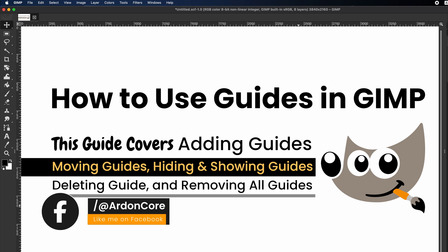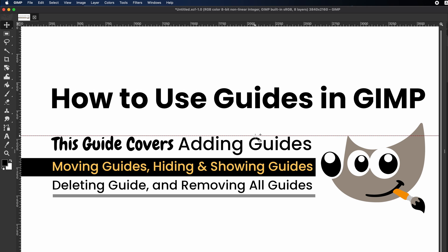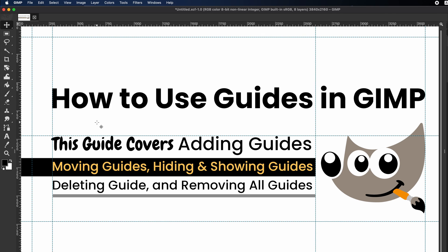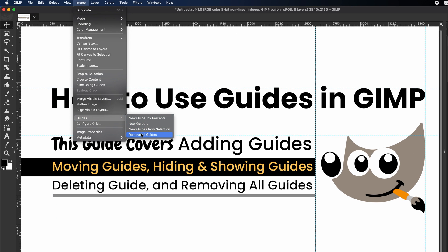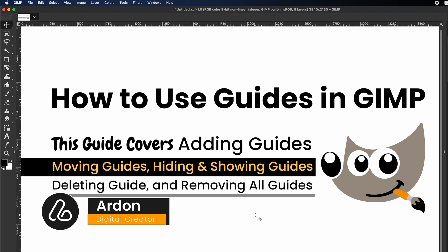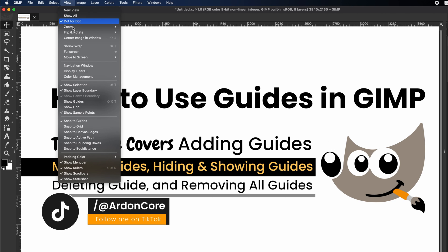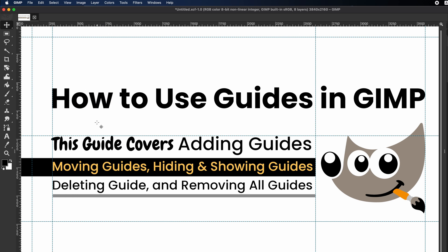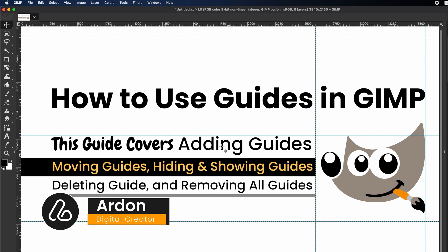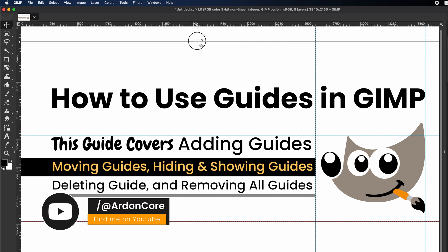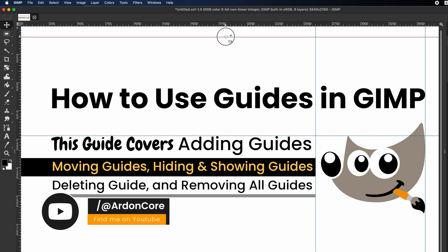Thank you for watching our GIMP guides tutorial. Today, we learned how to create both horizontal and vertical guides using simple drag-and-drop methods and the New Guide options. We also covered how to move, hide and delete guides individually, as well as how to remove all guides at once. I hope these tips help you achieve more precise alignment in your projects. If you found this tutorial helpful, please give it a thumbs up and subscribe or follow for more tips and tricks on GIMP. I'd love to hear about your experiences or any questions in the comments below. Until next time, happy editing!